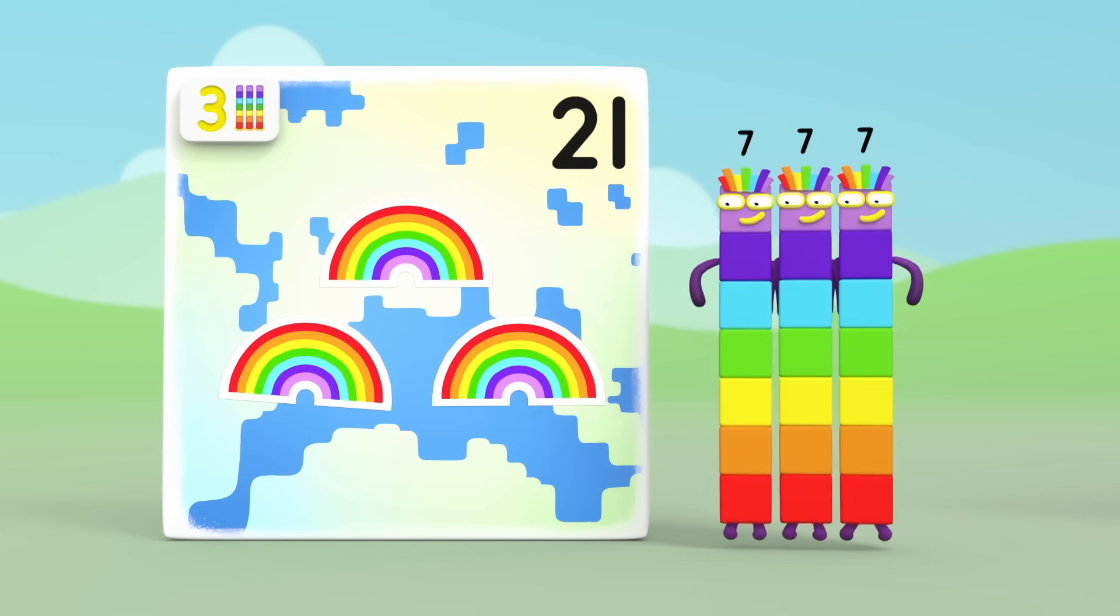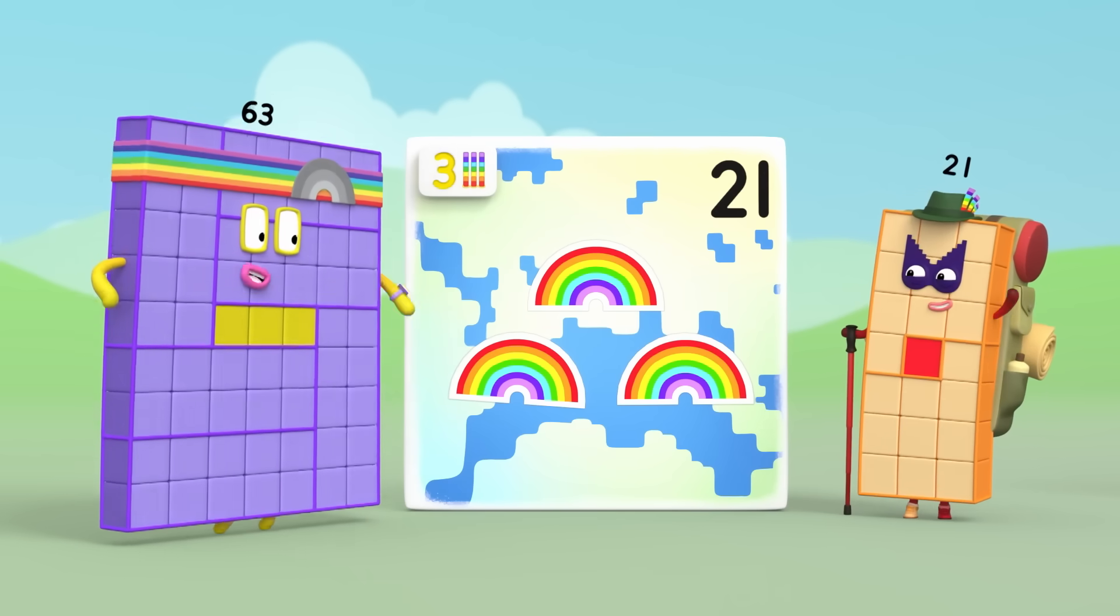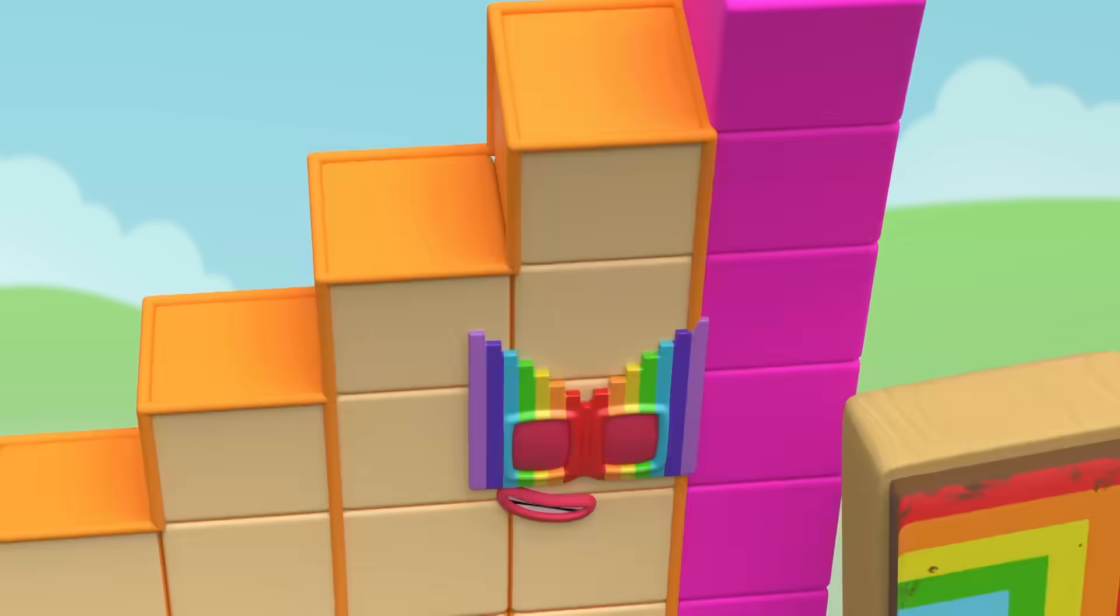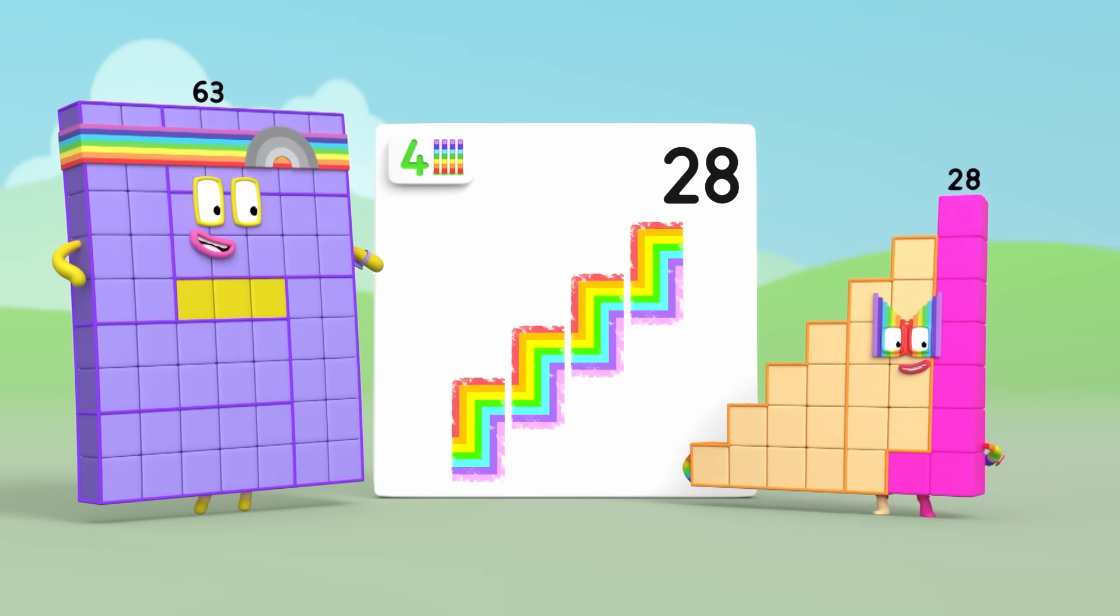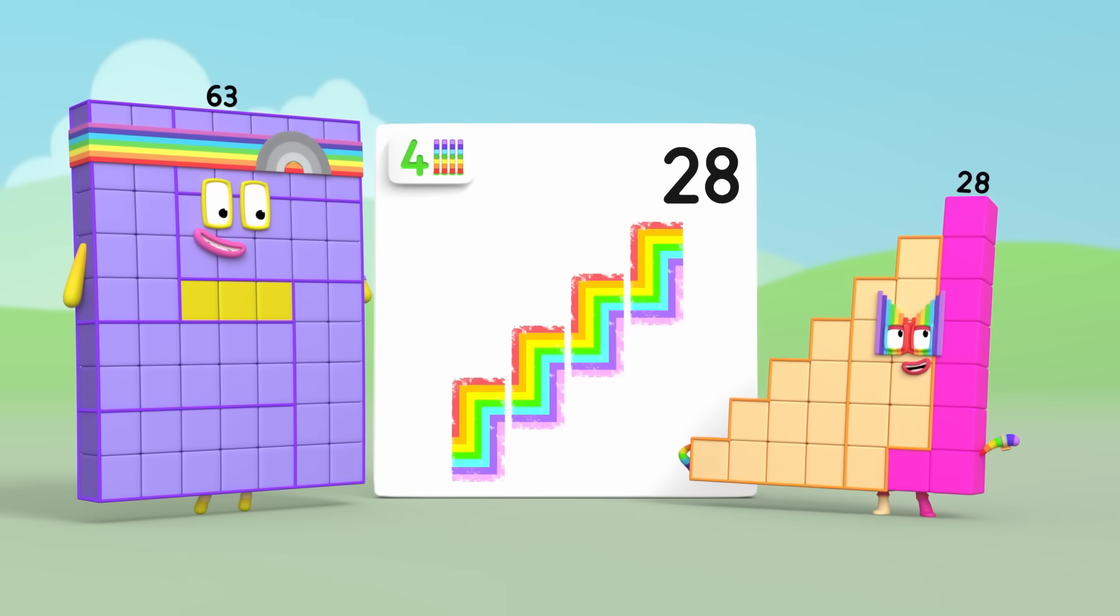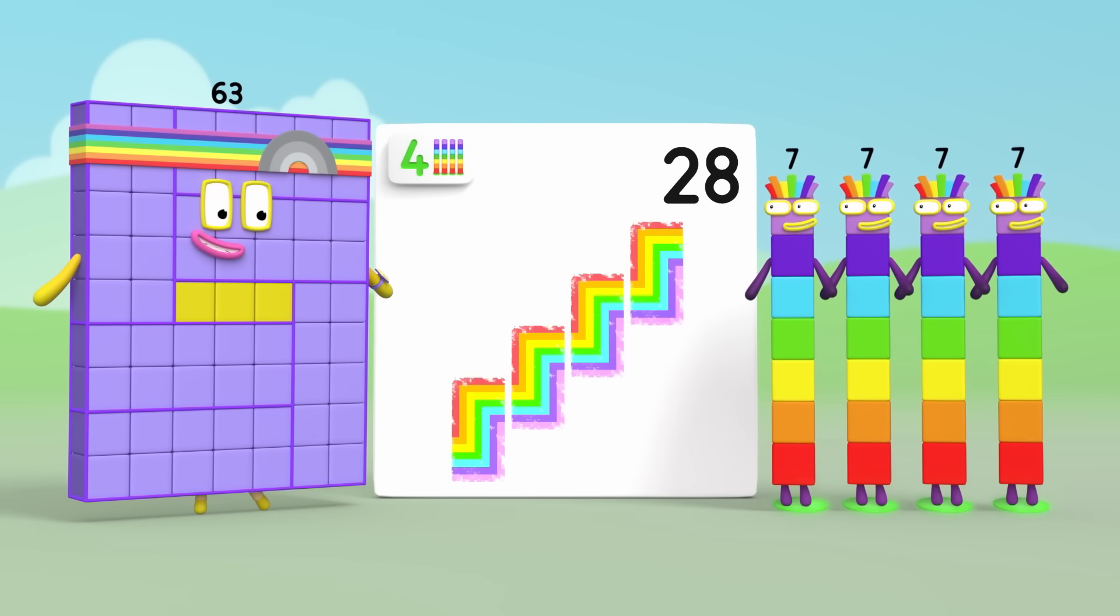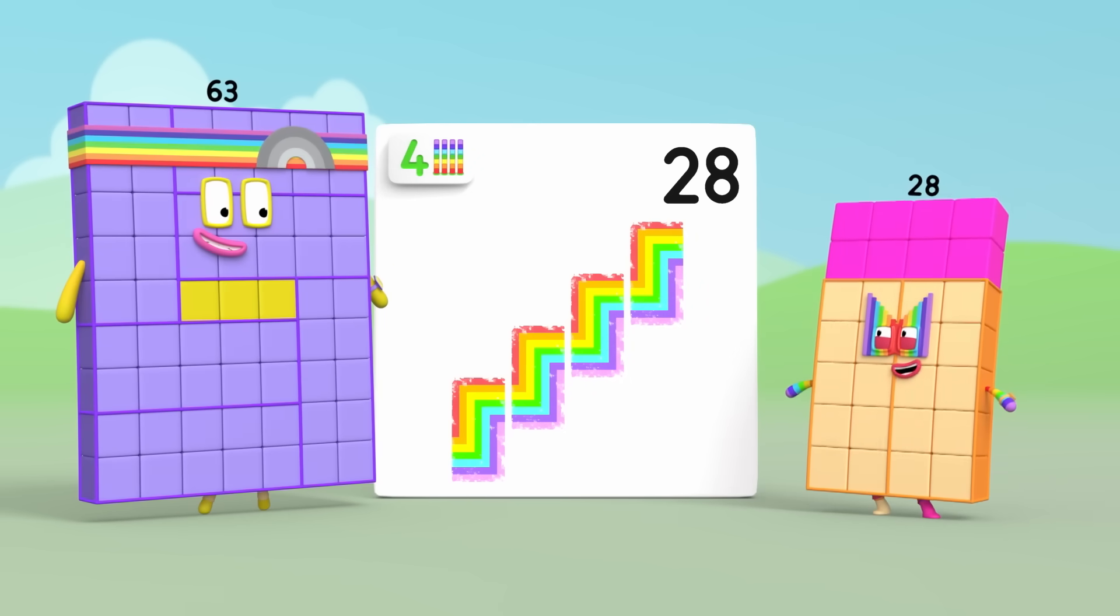Three sevens, three rainbows. Hello, Twenty-one. Lovely map. Thank you. Nice pattern, Twenty-eight. I'm stepping up to make my mark. Four sevens, four rainbows. What a perfect pattern.